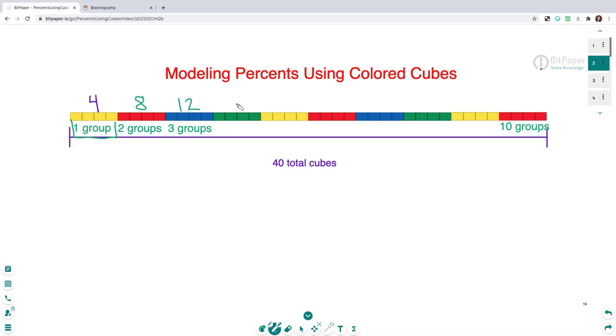So after 12, four groups of four is 16, five groups of four is 20, six groups of four is 24, seven groups of four is 28, eight groups of four is 32, nine groups of four is 36, and then all 10 groups will be 40 cubes.